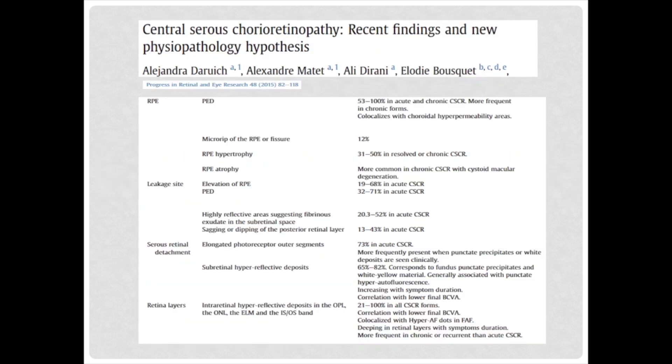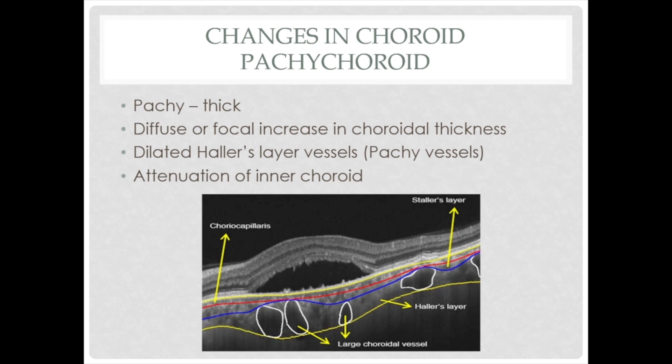Going on to the topic proper, the features of both acute and chronic CSCR overlap with each other, so we will see the features occurring layer by layer. Changes in the choroid: CSCR belongs to the pachychoroid spectrum. Pachychoroid is derived from the Greek word 'pachy' meaning thick. It is characterized by diffuse or focal increase in choroidal thickness. Pachychoroid has dilated Haller's layer vessels, called pachychoroid vessels, and attenuation of the inner choroid — that is the choriocapillaris and the Sattler's layers.